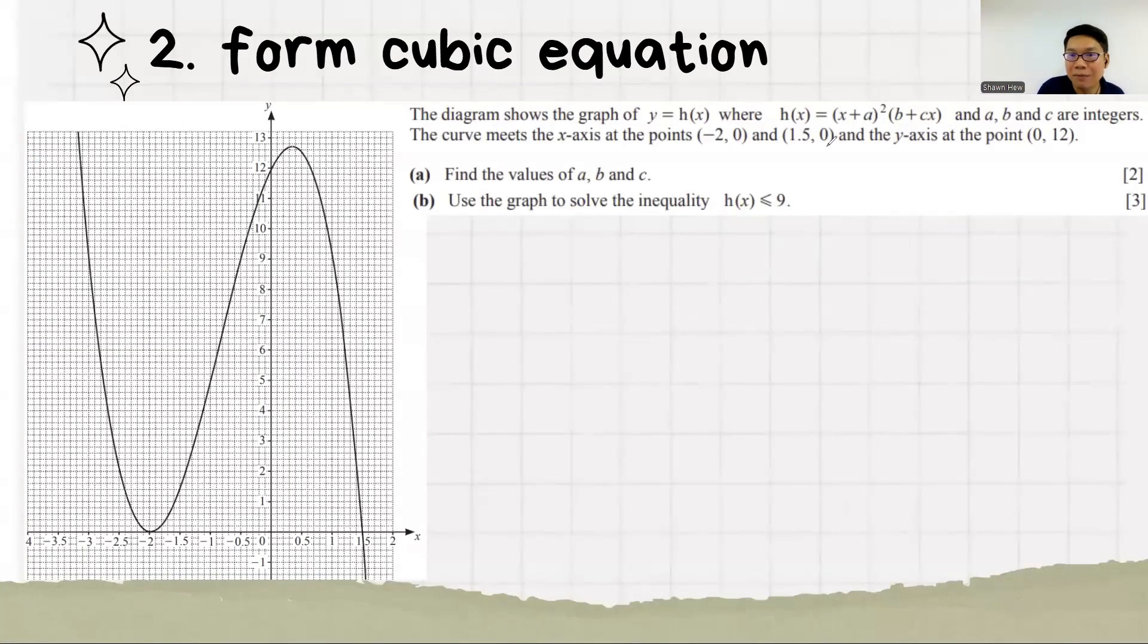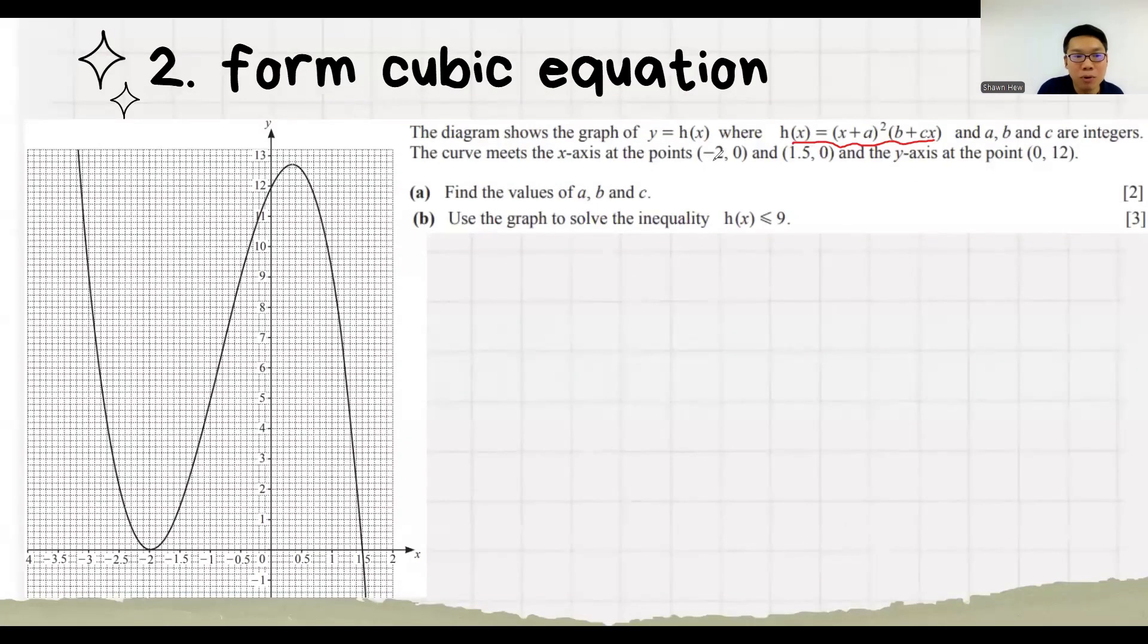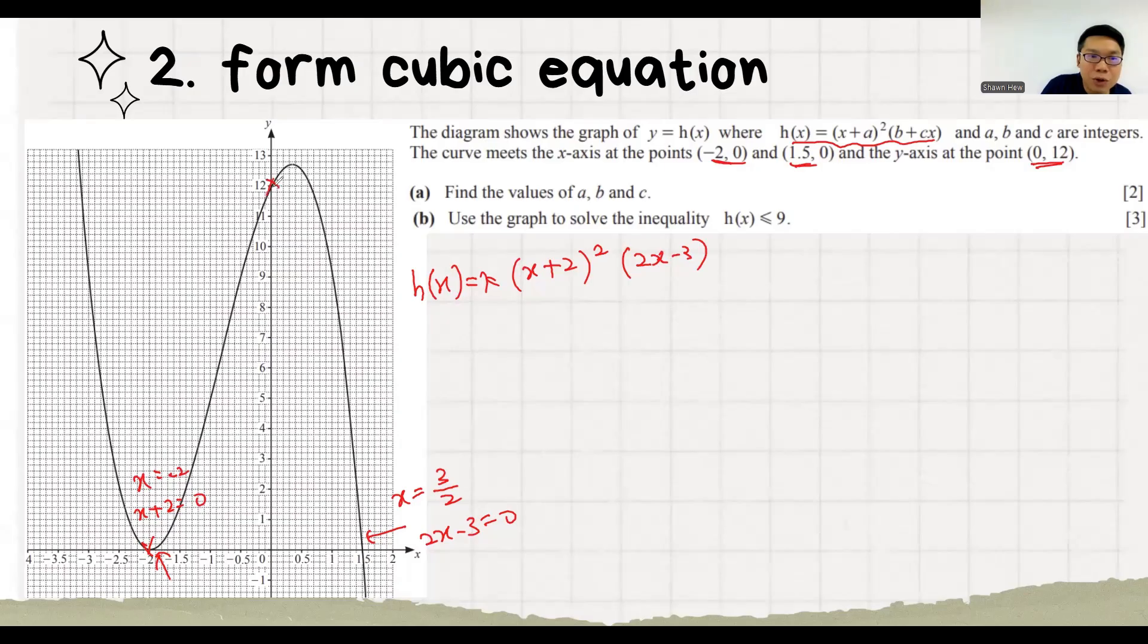Next question. The diagram shows you hx which have these. The curve meet the points of these and these and y-axis as these. So I should find the value of a, b, c. So we form our equation first. hx equals to k, a constant. And then x equals to minus 2 means that x plus 2 equals to 0. And since this is a turning point, so we put a square here. And then x equals to 1.5. 1.5 is 3 over 2. 2x minus 3 equals 0. Then we use this coordinate, 0, 12 to find the value of k. K is minus 1.